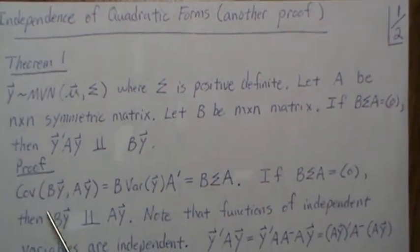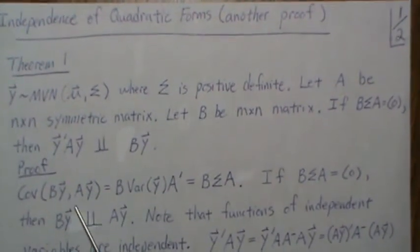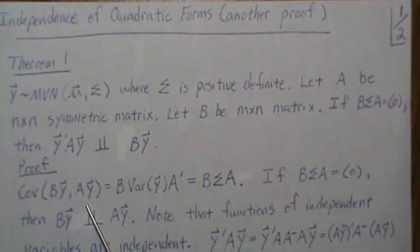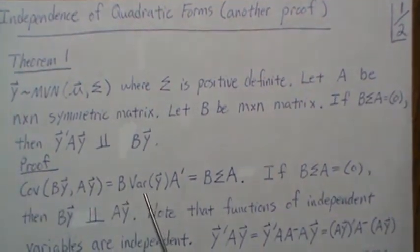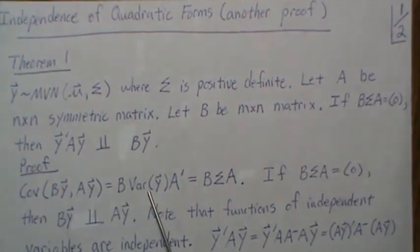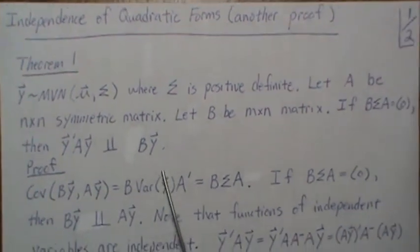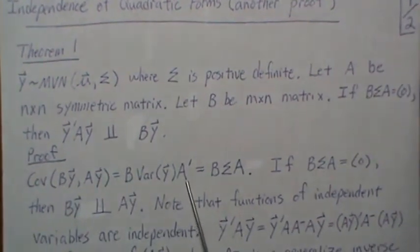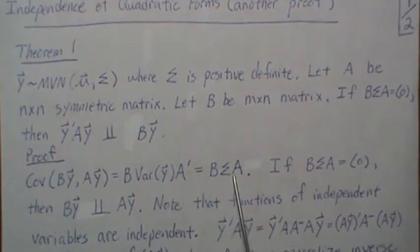Now the proof goes like this. The covariance of BY and AY is B times the covariance of Y and Y, which is the variance of Y, and you have to transpose that A out back here. Since A is symmetric, we just get BΣA.